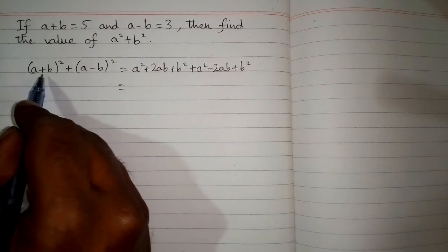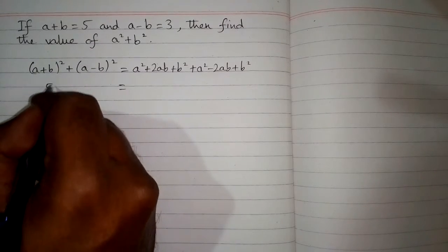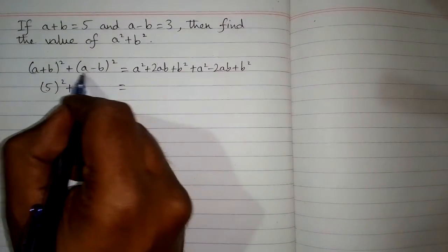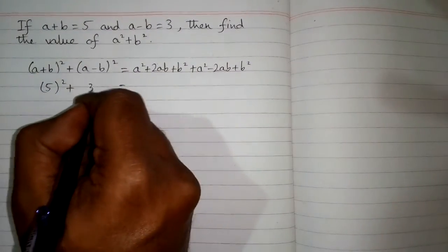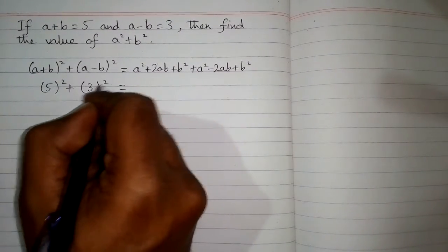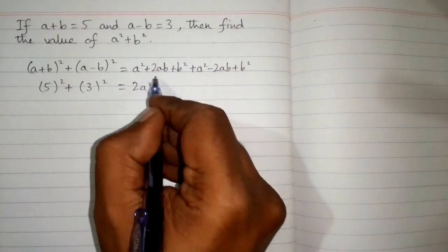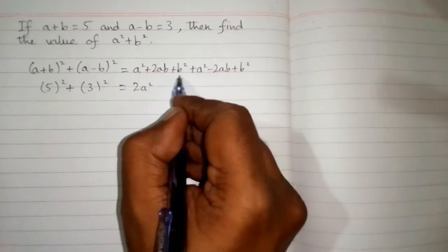Now we can put the value of a+b over here. So the value of a+b is 5, so we will write 5². And the value of a-b is 3, so we will write 3². Now a²+a² is 2a², and 2ab-2ab is 0, and b²+b² is 2b².